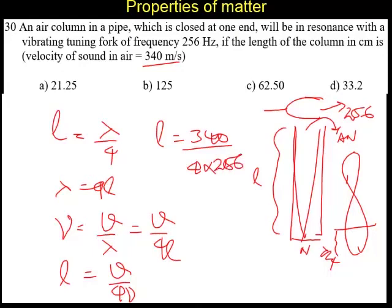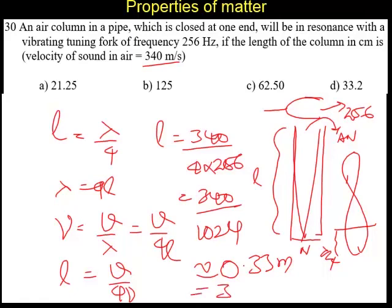340 divided by 256. So, it is going to be 340 divided by 1024. So, approximate answer is 0.33 meters or 33.2 centimeters.